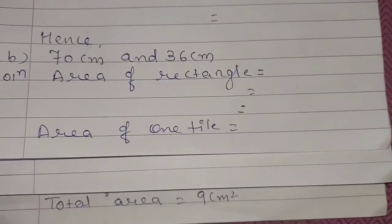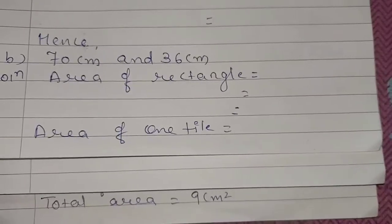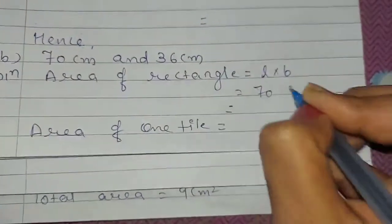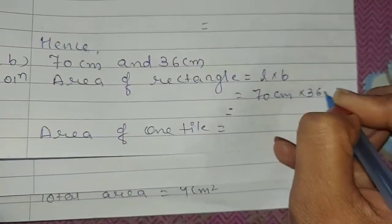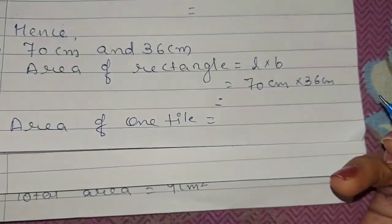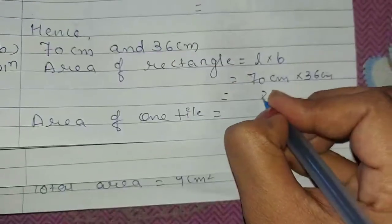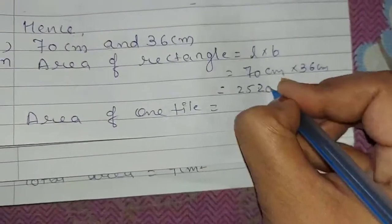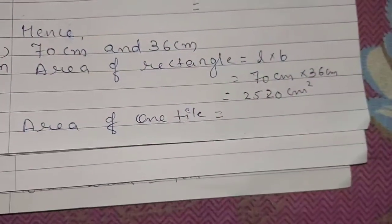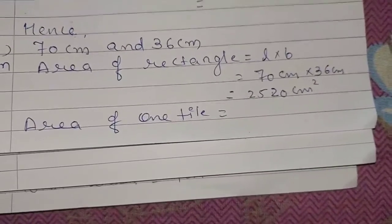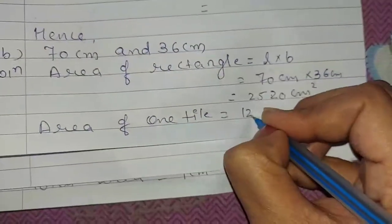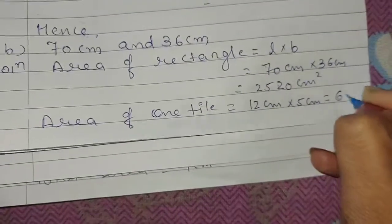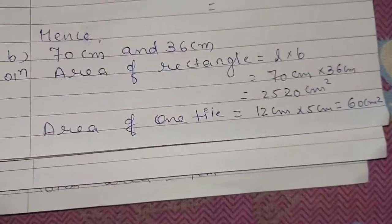Now for question B. Length is 70 cm and breadth is 36 cm. Area of rectangle equals length multiplied by breadth, which is 70 cm multiplied by 36 cm. Multiplying 70 by 36 gives 2,520 cm square. Area of one tile equals 12 cm multiplied by 5 cm, equals 60 cm square, as given in the question.